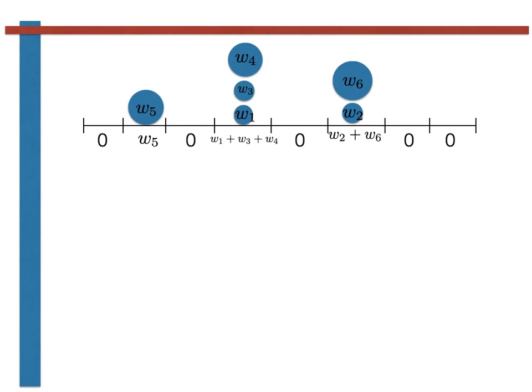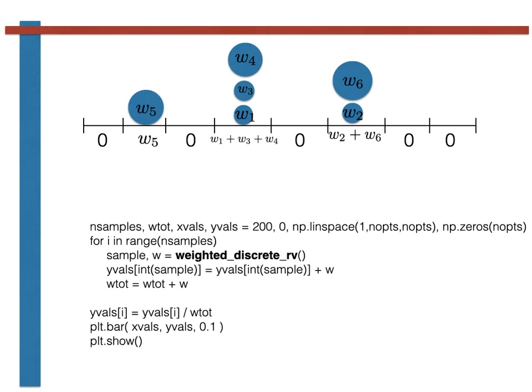To do all this in Python we would write a program something like the one shown here. This code is similar to the code that we would write to calculate an unweighted histogram. We thus define an array called yvals here that we would use to hold our histogram. As we would do for an unweighted histogram, this array is initially set equal to zero.